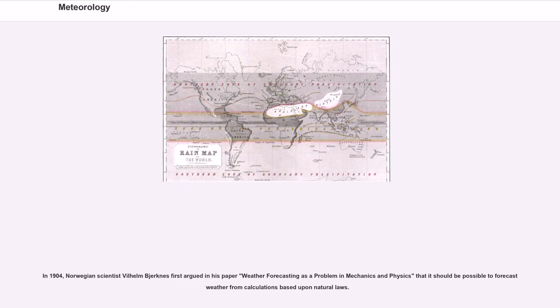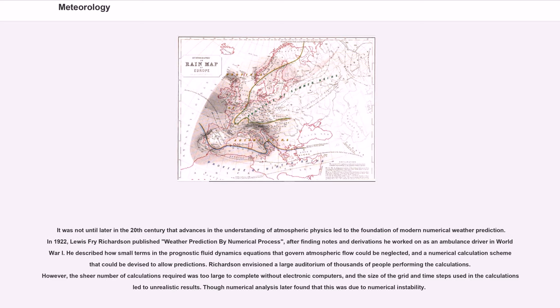In 1904, Norwegian scientist Vilhelm Bjerknes first argued in his paper that weather forecasting is a problem in mechanics and physics. In 1922, Lewis Fry Richardson published Weather Prediction by Numerical Process. He described how small terms in the prognostic fluid dynamics equations that govern atmospheric flow could be neglected, and a numerical calculation scheme that could be devised to allow predictions. However, the sheer number of calculations required was too large to complete without electronic computers, and the size of the grid and time steps used in the calculations led to unrealistic results.